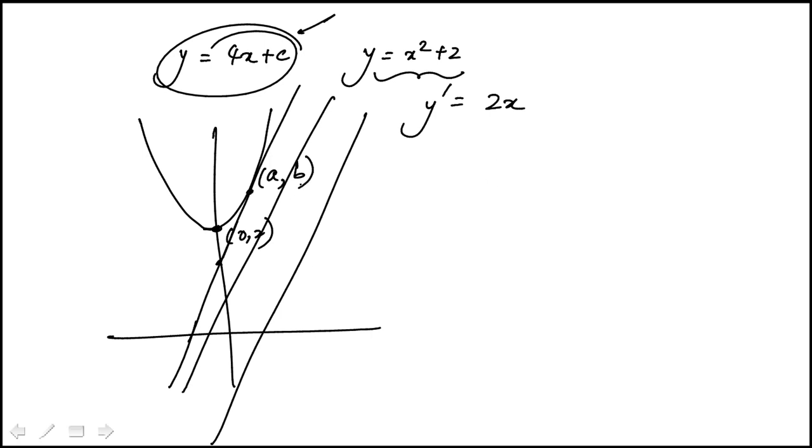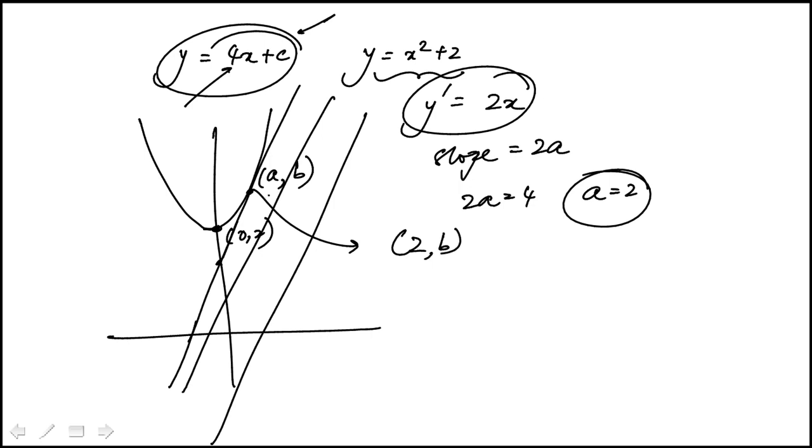So the slope at that point would be 2a, and that slope has to match with the slope of the tangent line, which is 4. So a = 2. Essentially, the x-coordinate of that point is 2.